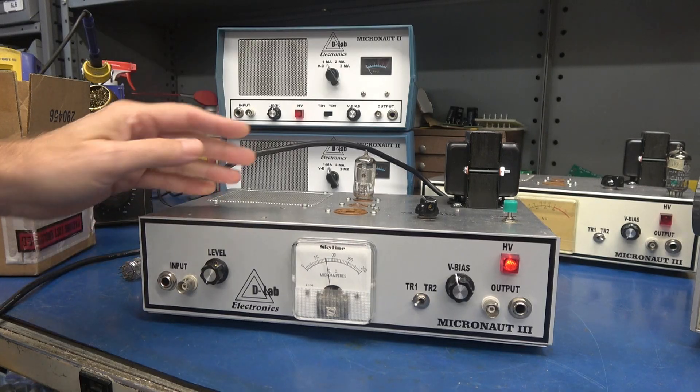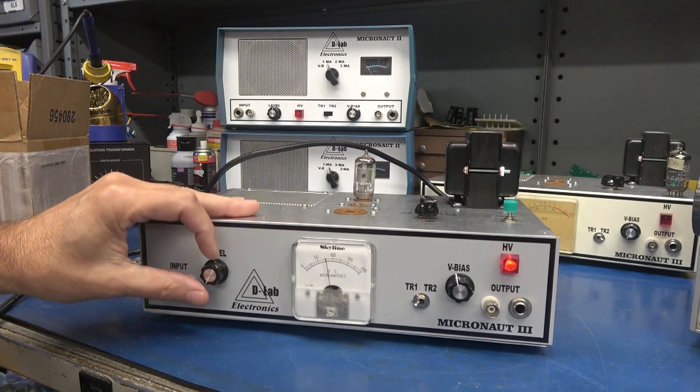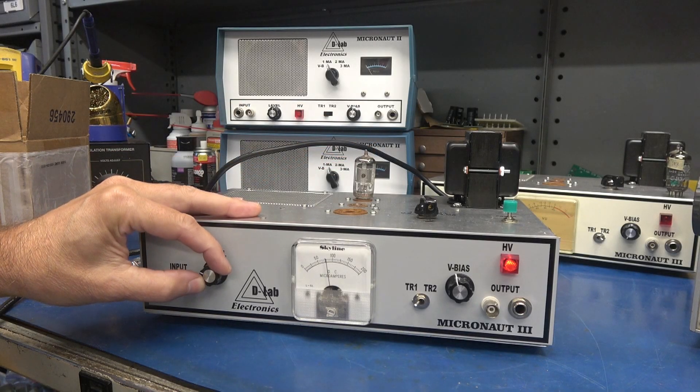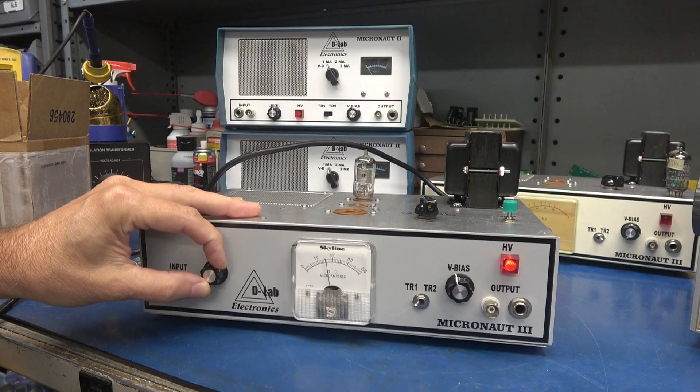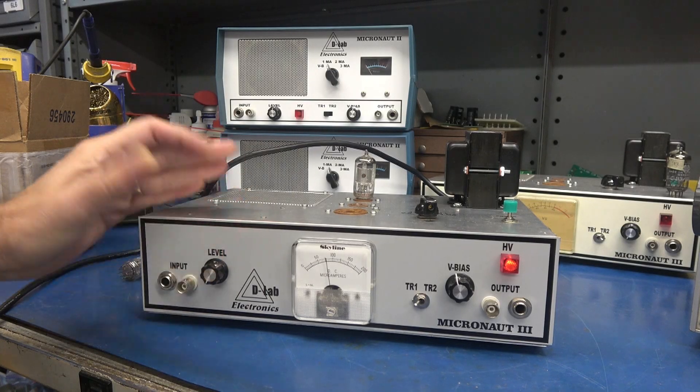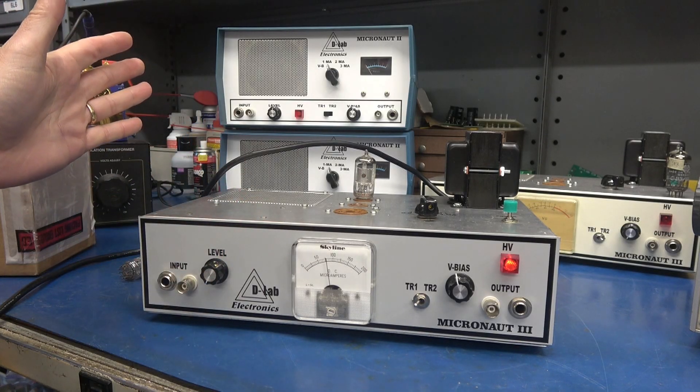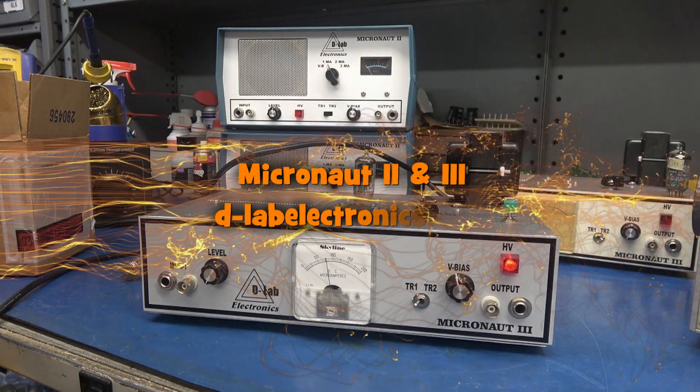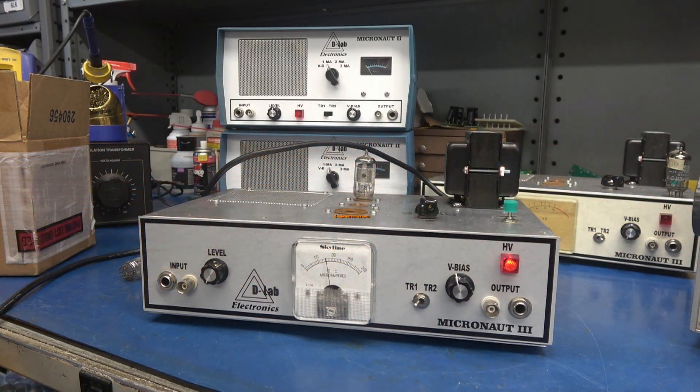So the Micronaut also has a dedicated socket for EF86 tubes. And that one is not in good shape, is it? I'm still working on the line. I have two of the Model 2s ready. I'm building up four of the Model 3s. I'll let you guys know when they become available.